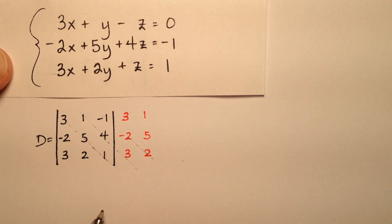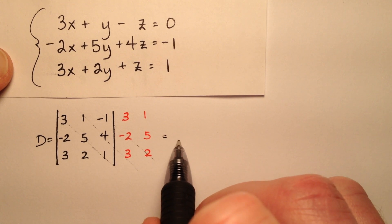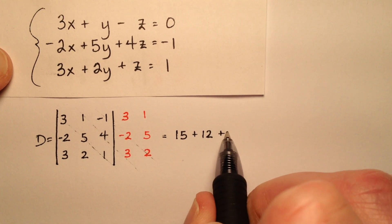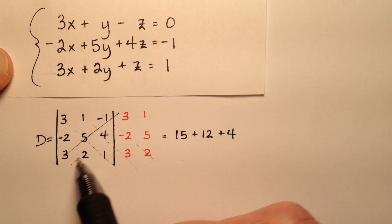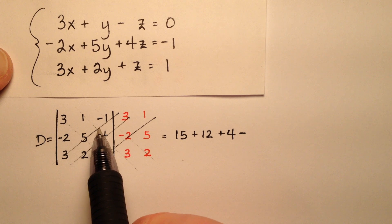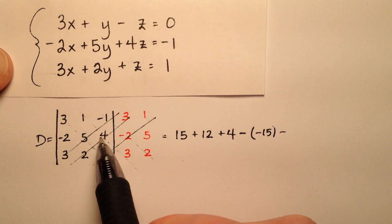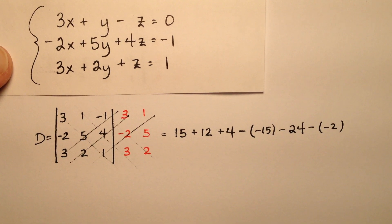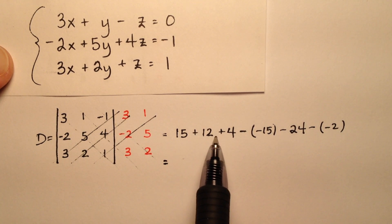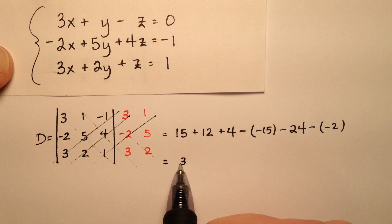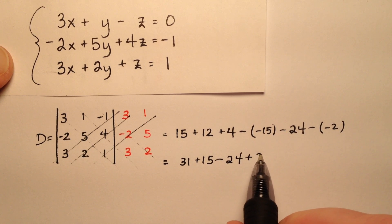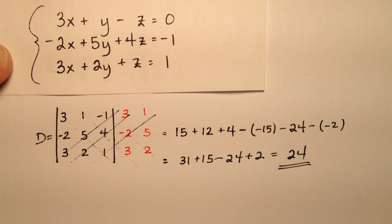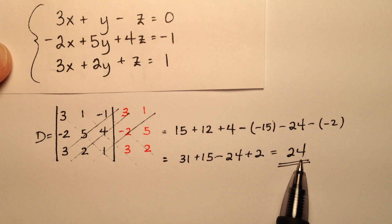The main diagonals will be multiplied and added: 3 times 5 times 1 is 15, plus 1 times 4 times 3 is 12, plus negative 1 times negative 2 times 2 is positive 4. The minor diagonals will be subtracted: minus 3 times 5 times negative 1 which is negative 15, minus 2 times 4 times 3 which is 24, minus 1 times negative 2 times 1 which is negative 2. Simplifying: 15 plus 12 plus 4 equals 31, plus 15 minus 24 plus 2 gives a determinant D of 24.